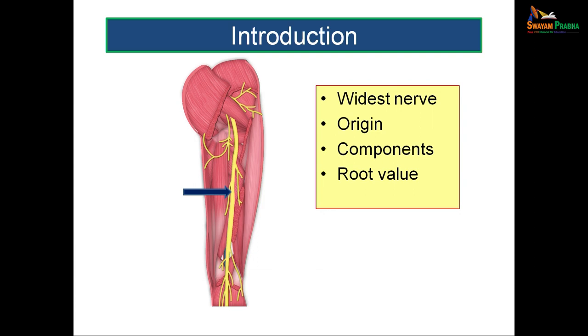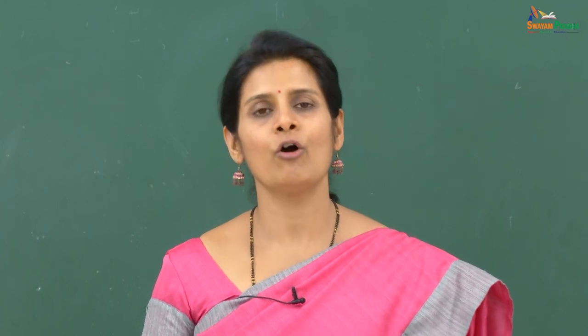The tibial component of the sciatic nerve has fibers arising from the ventral branches of ventral rami of L4, L5, S1, S2, and S3, where L stands for lumbar and S for sacral spinal segments. The common peroneal component has fibers from the dorsal branches of ventral rami of L4, L5, S1, and S2. So the sciatic nerve, formed by both components, has a root value of L4, L5, S1, S2, and S3.